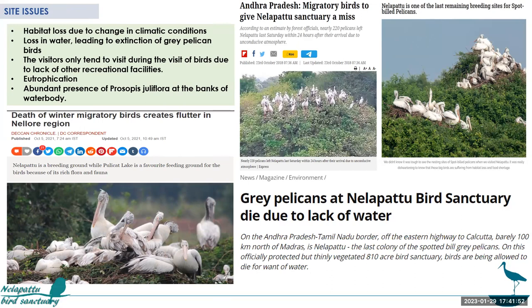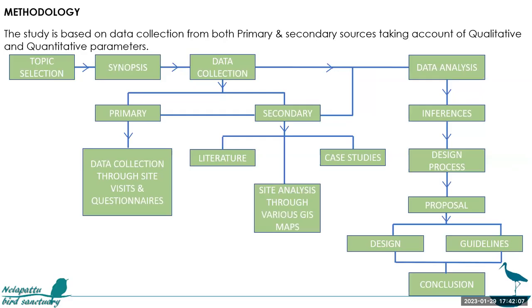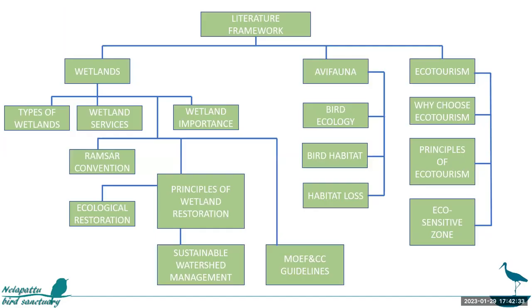This was the main issue I focused on in my thesis. I was also inclined to increase the footfall on this site because the site is almost dead after two months, so I wanted to have a distributed footfall as well. For methodology, I collected data from primary and secondary sources, conducted site surveys, and then analyzed and proposed designs in two ways: a design stage and a guideline stage. My literature is divided into three parts: wetlands, avifauna, and ecotourism.